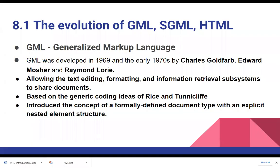First we will go with the history part of XML. GML — Generalized Markup Language — was developed in 1969 by Charles Goldfarb, Edward Mosher, and Raymond Laurie. It is one of the early markup languages.